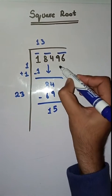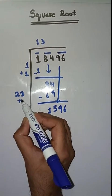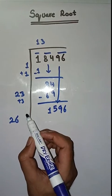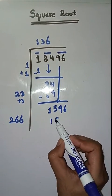Next pair is 96, bring it down. 23 plus 3 which is equal to 26. So we will take a number 6. 266 times 6 is 1596.